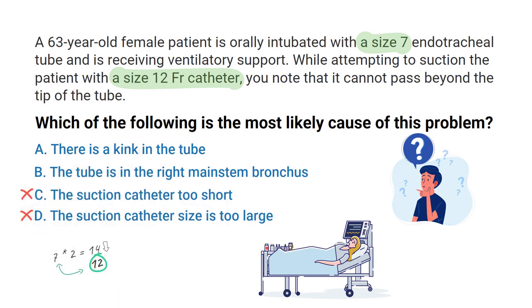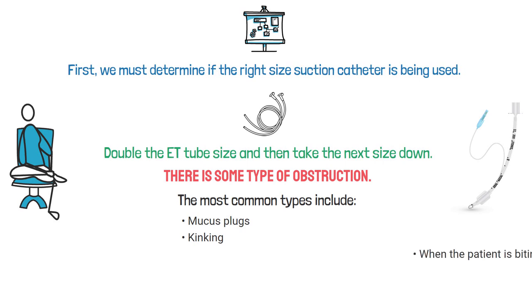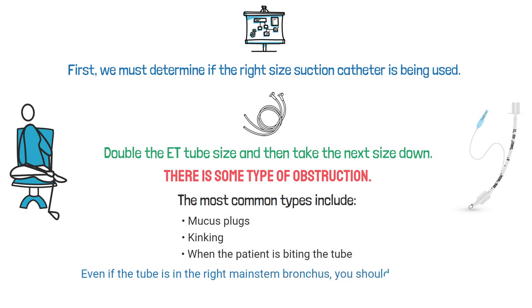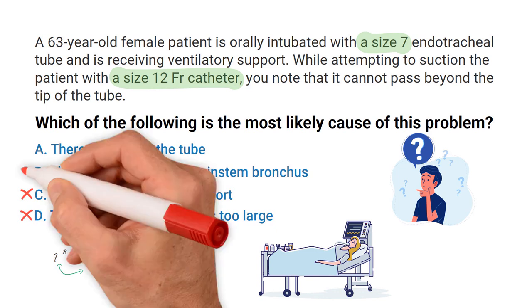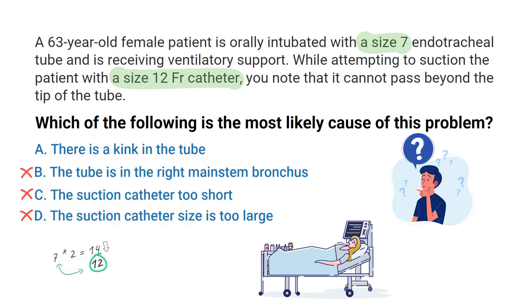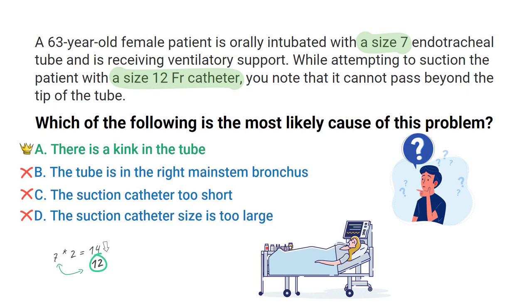In general, whenever you are unable to pass a suction catheter down the ET tube, it usually indicates there is some type of obstruction. The most common types include mucus plugs, kinking, or when the patient is biting the tube. Even if the tube is in the right mainstem bronchus, you should still be able to pass the suction catheter beyond the tip of the tube. So by reading the question carefully, we can determine that the correct answer has to be A — there is a kink in the tube.